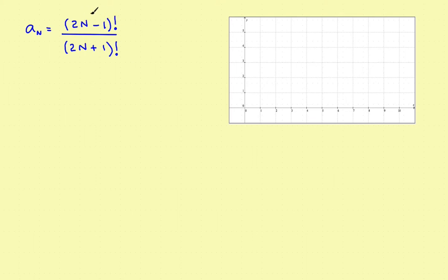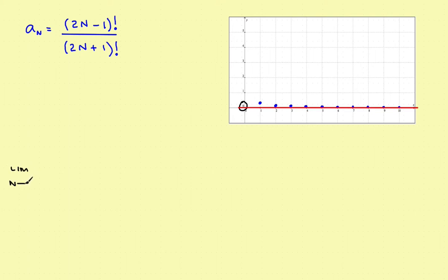Now for the third problem: i sub n is defined as (2n minus 1)! divided by (2n plus 1)!. The factorials are a little different here, so let's plot the points first. They start out and appear to approach the x-axis — the blue dots seem to be approaching the red line at zero. So graphically, this sequence does seem to converge to zero. Let's confirm by finding the limit as n approaches infinity of (2n minus 1)! divided by (2n plus 1)!.